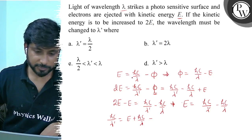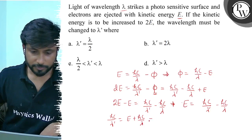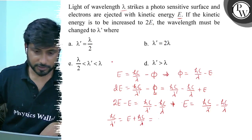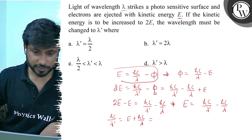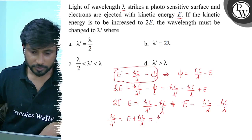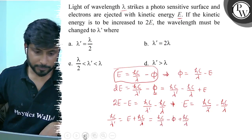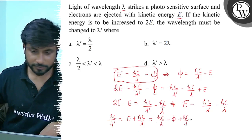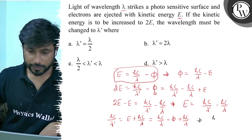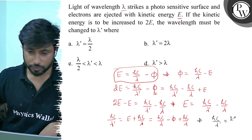Now substituting E equals hc by lambda minus phi into the equation, hc by lambda dash equals hc by lambda minus phi plus hc by lambda. Combining these terms, hc by lambda dash equals 2hc by lambda minus phi.